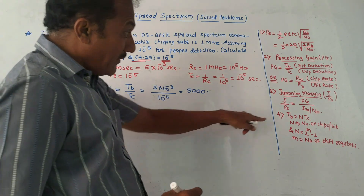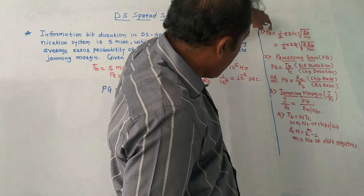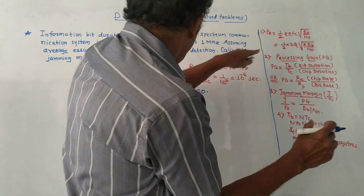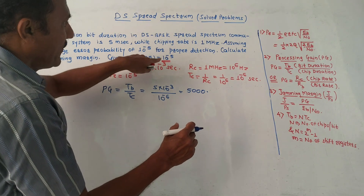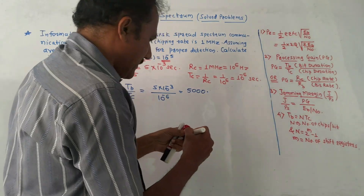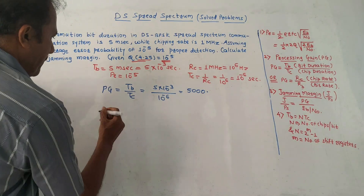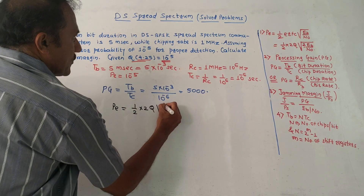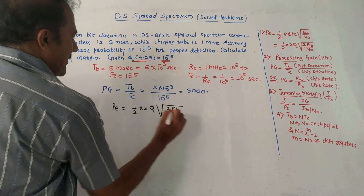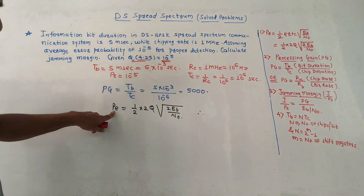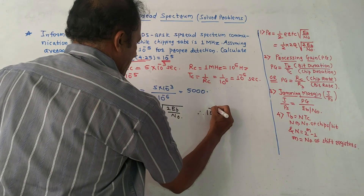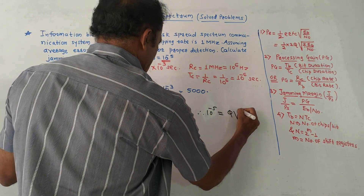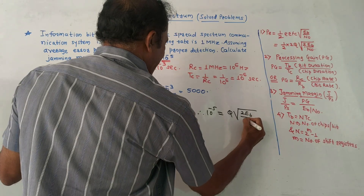Now we want to calculate the value of EB by N0. For this we have to make use of these two formulae. In the given question, the value of Q is given: Q of 4.25 is 10 raised to minus 5. So let us write formula number 2: PE is equal to one-half into 2 Q of square root of 2 EB upon N0. From this, the value of PE is 10 raised to minus 5. So 10 raised to minus 5 equals Q of square root of 2 EB upon N0.